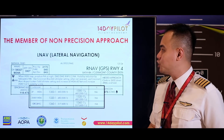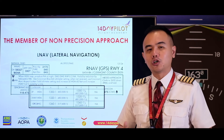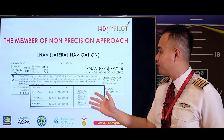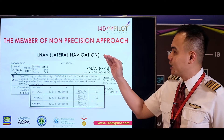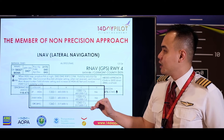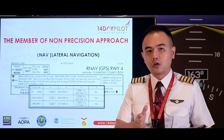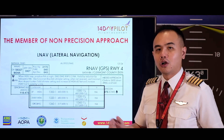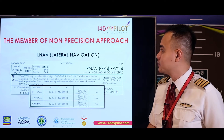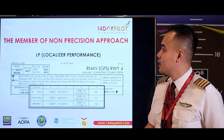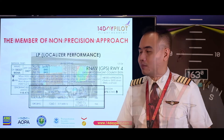LNAV — lateral navigation — if you're using LNAV, we're talking about RNAV. It uses GPS, but LNAV only gives you course deviation information with no vertical guidance. LP — localizer performance — is also a non-precision approach type.